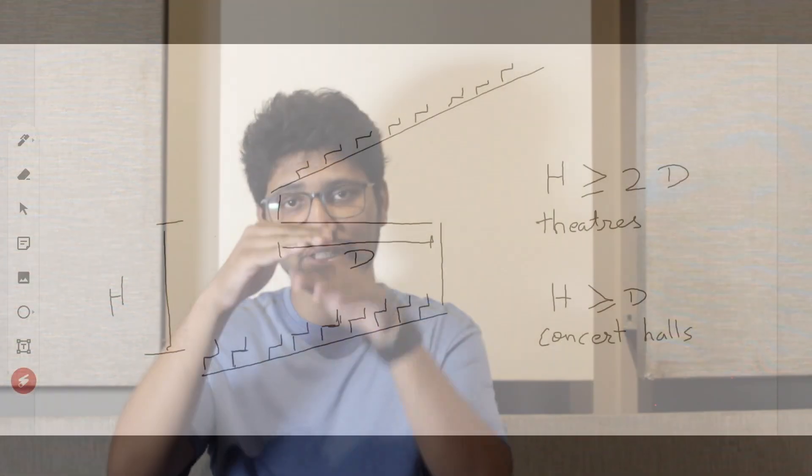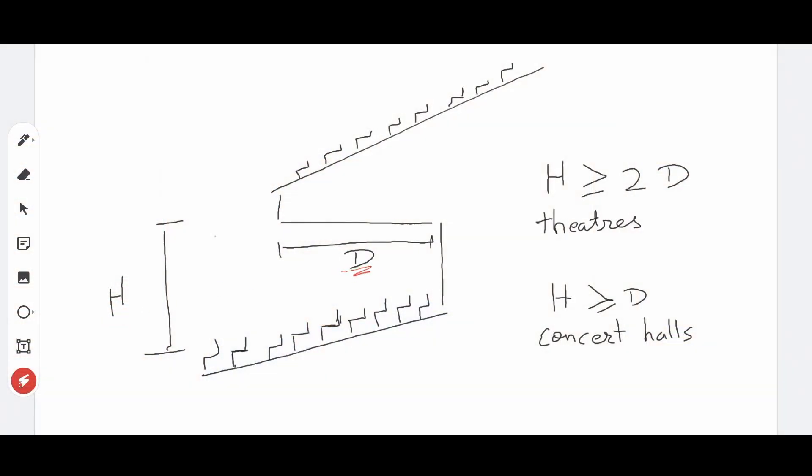To have good audio below the balcony overhang, the level of reverberant energy is of great importance. The level of reverberant energy below the balcony overhang is determined by the relation between the height of the overhang and the depth of the seating below the overhang.